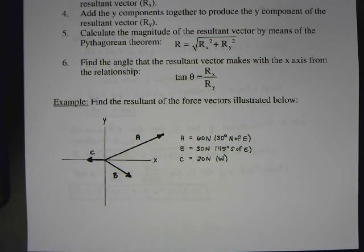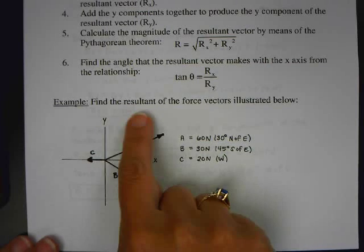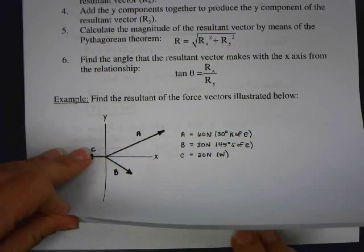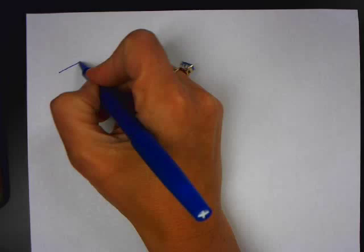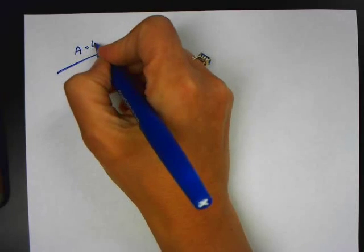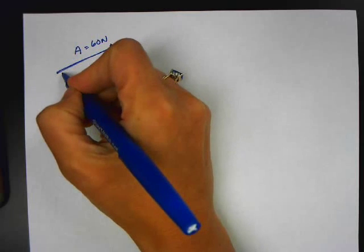Instead of going through the notes, I'm just going to do it from scratch. It says find the resultant of the force vectors illustrated below. I have three vectors and I want to find the resultant of those three. So I'll do this on a piece of paper — it's already worked out in your notes, just follow along. I'm going to take each vector individually. So here's vector A.